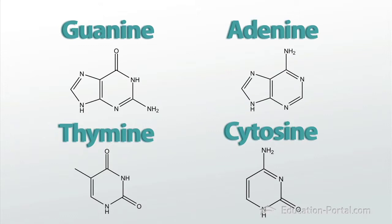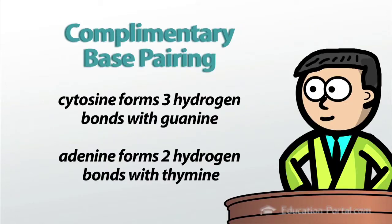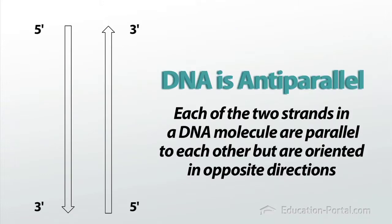There are four different nitrogenous bases: guanine, adenine, thymine, and cytosine. Cytosine can form three hydrogen bonds with guanine, and adenine can form two hydrogen bonds with thymine. If we represent the strands as arrows, with the arrowhead at the three prime end of the strand, we can see that the strands in a DNA molecule are organized anti-parallel relative to each other.